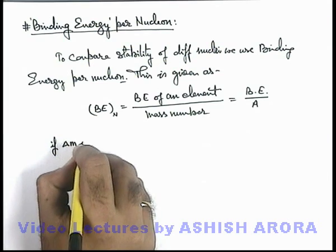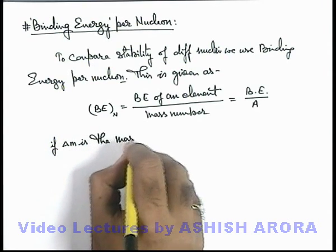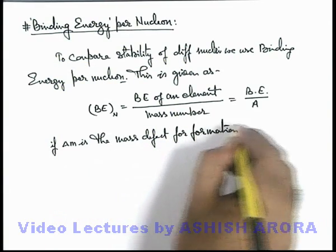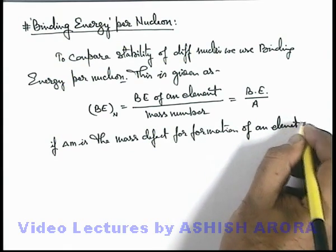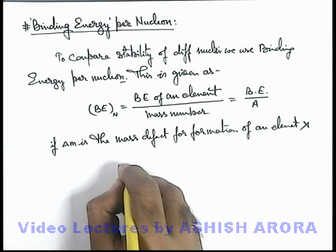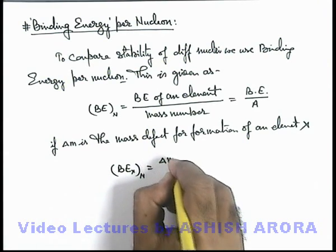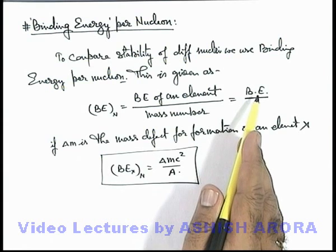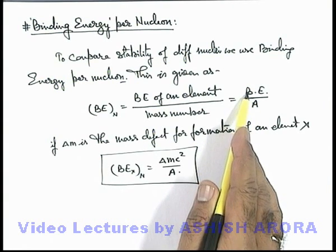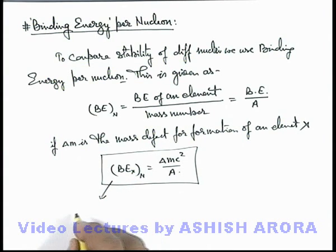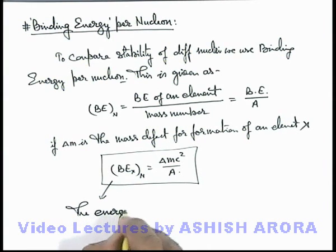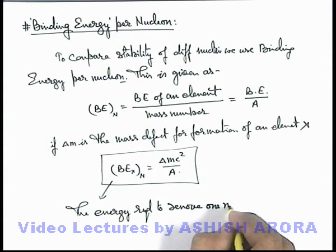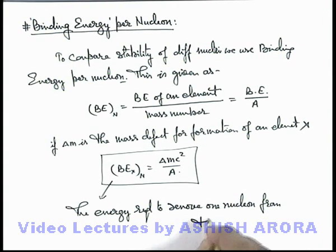Here we can write: if delta m is the mass defect for the formation of an element X, then its binding energy per nucleon for the element X can be written as delta m times c squared divided by A. And as binding energy is the amount of energy which is required to be supplied to split the nucleus into its constituents, binding energy per nucleon is the energy required to remove one nucleon from the nucleus.